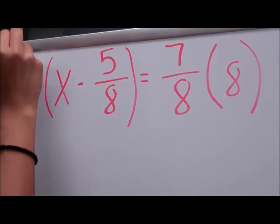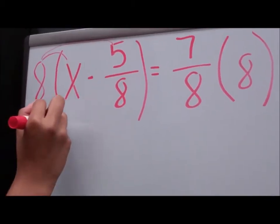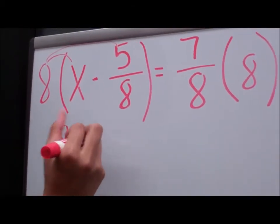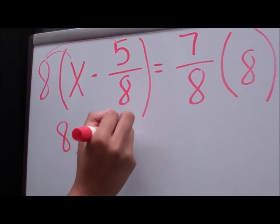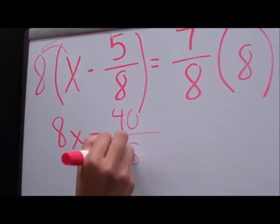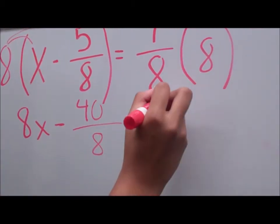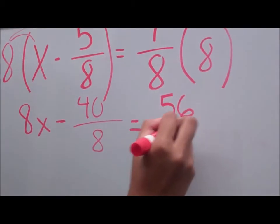Using the distributive property, we multiply 8 and x and 8 and 5. So it's 8x subtract 40 over 8. And then, on the other side, it is 56 over 8.